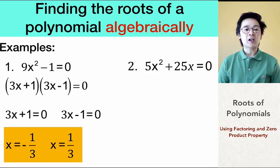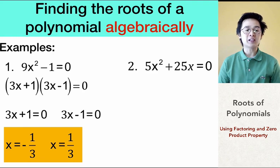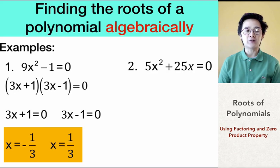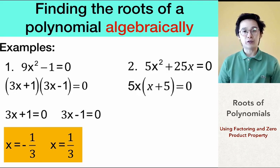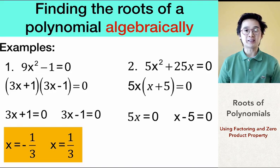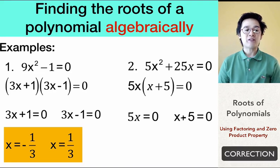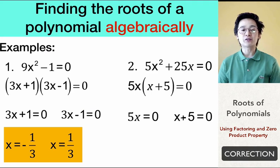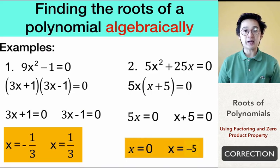For problem two, 5x² + 25x = 0: since 5 is not a perfect square, we use the greatest common factor. The GCF of 5x² and 25x is 5x, giving 5x(x + 5) = 0. Using the zero product property, we get 5x = 0 and x + 5 = 0, so the solutions are x = 0 and x = 5.